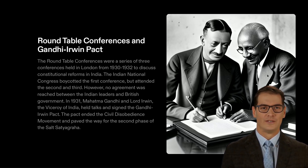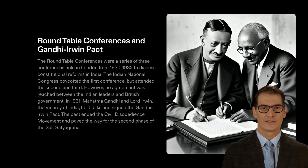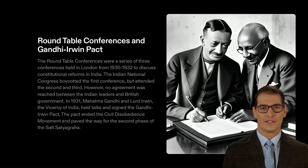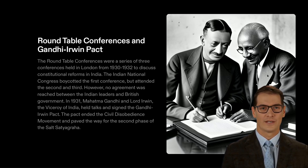The Salt Satyagraha was a landmark event in India's journey to independence. It was an unprecedented display of civil disobedience in which thousands of Indians peacefully protested against British rule. Through this act of defiance, Indian nationalists were able to bring global attention to the cause of freedom and inspire the entire nation to rally together in pursuit of independence. The Salt Satyagraha ultimately paved the way for India to gain its long-sought-after freedom from British rule and establish itself as a democratic country.